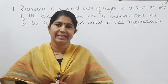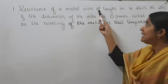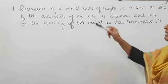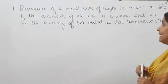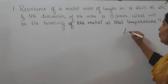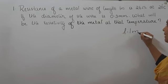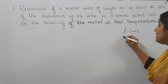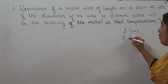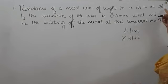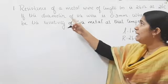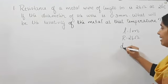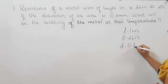Our first question is: resistance of a metal wire of length L equal to 1 meter is 26 ohm at 20 degree Celsius. If the diameter of the wire is 0.3 millimeter.